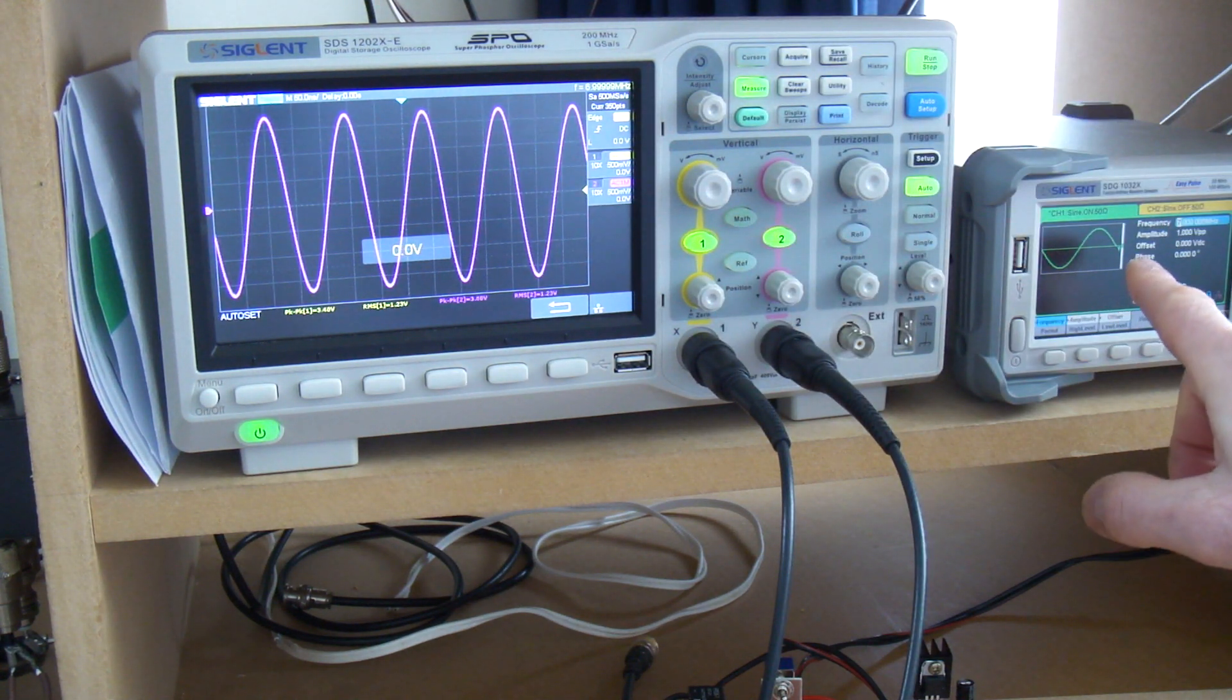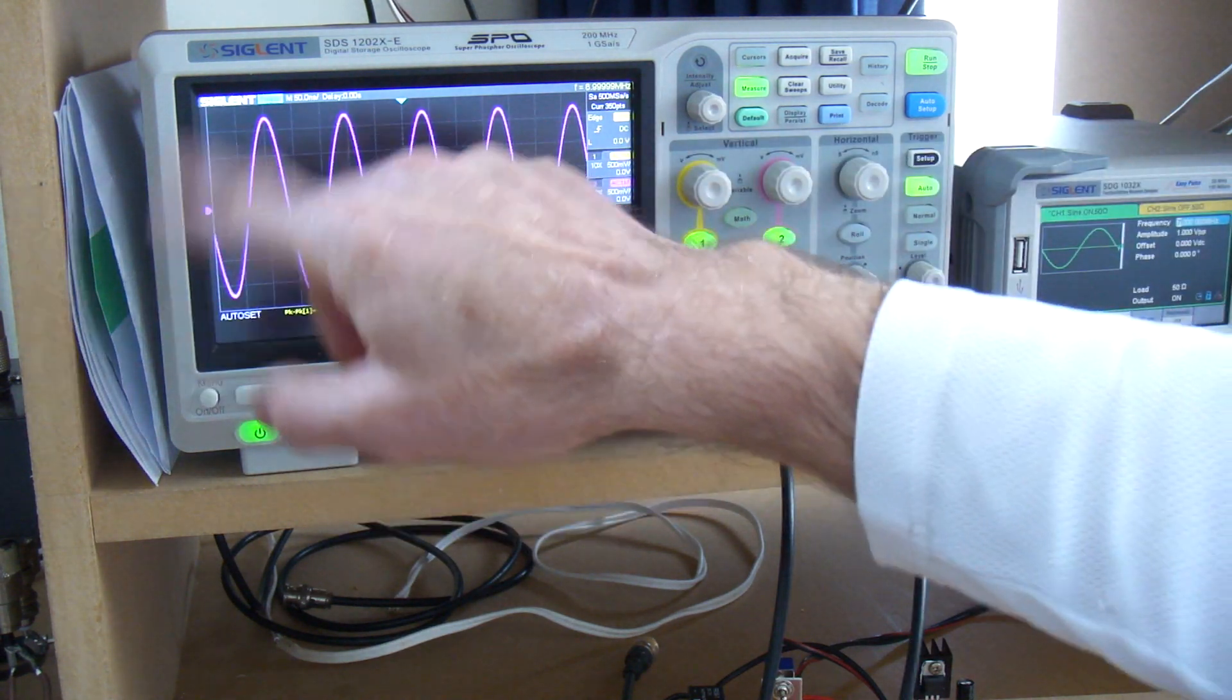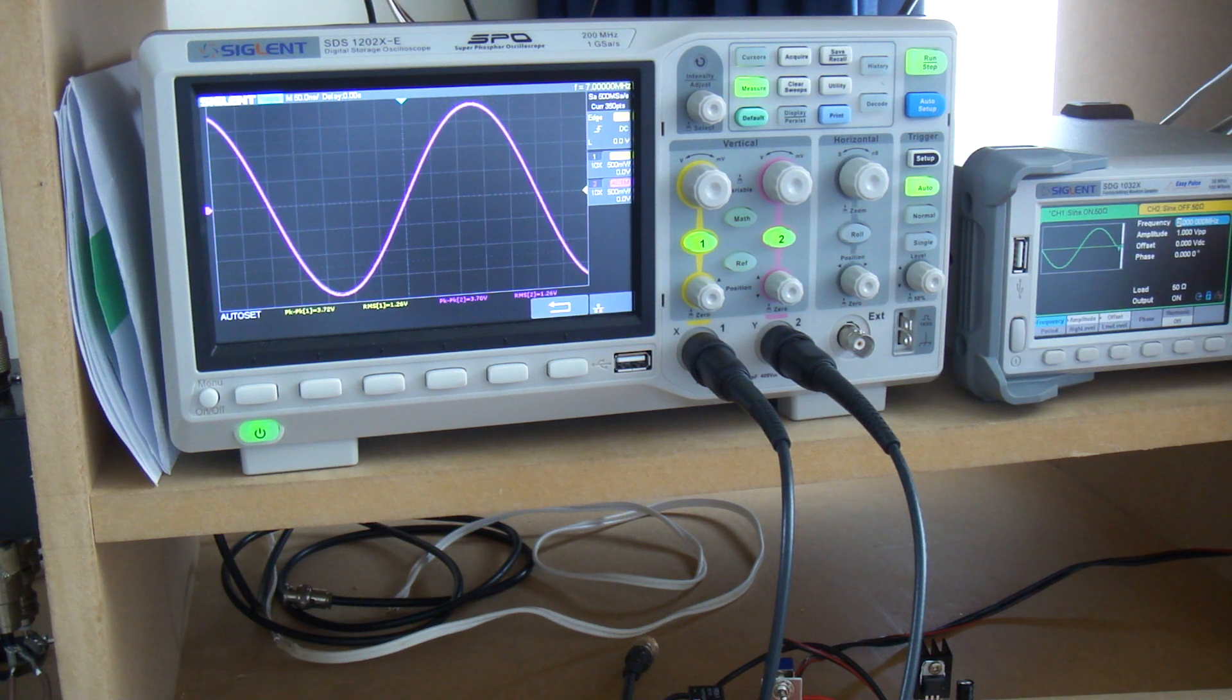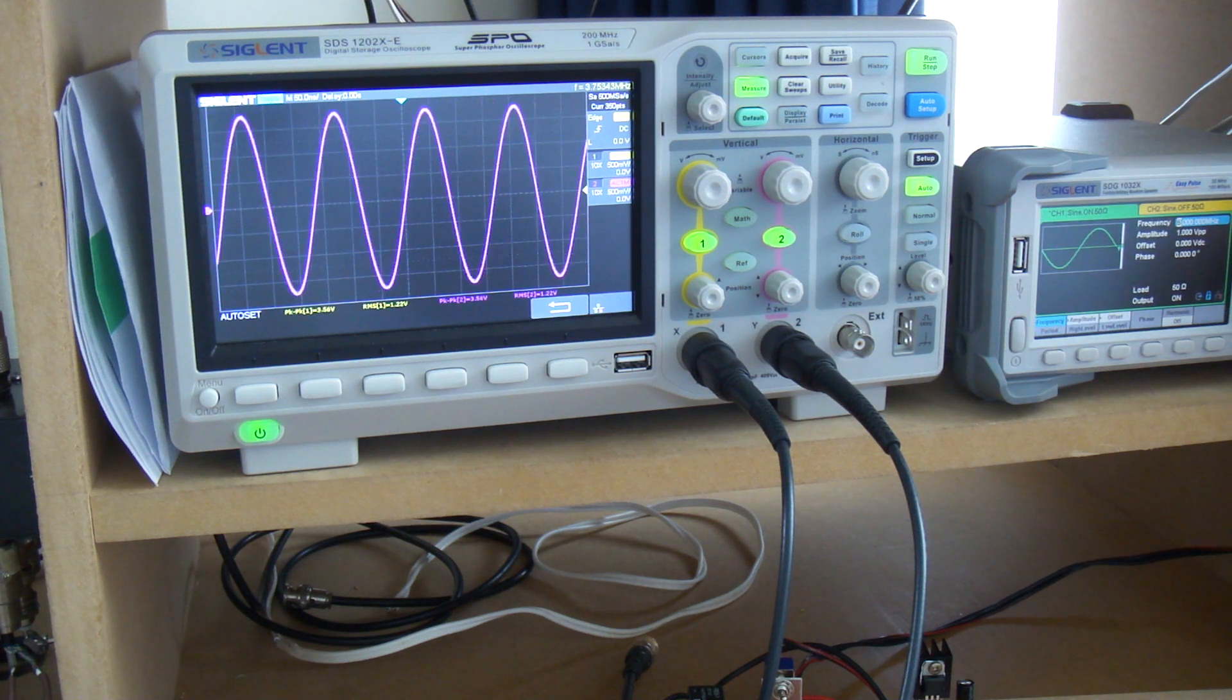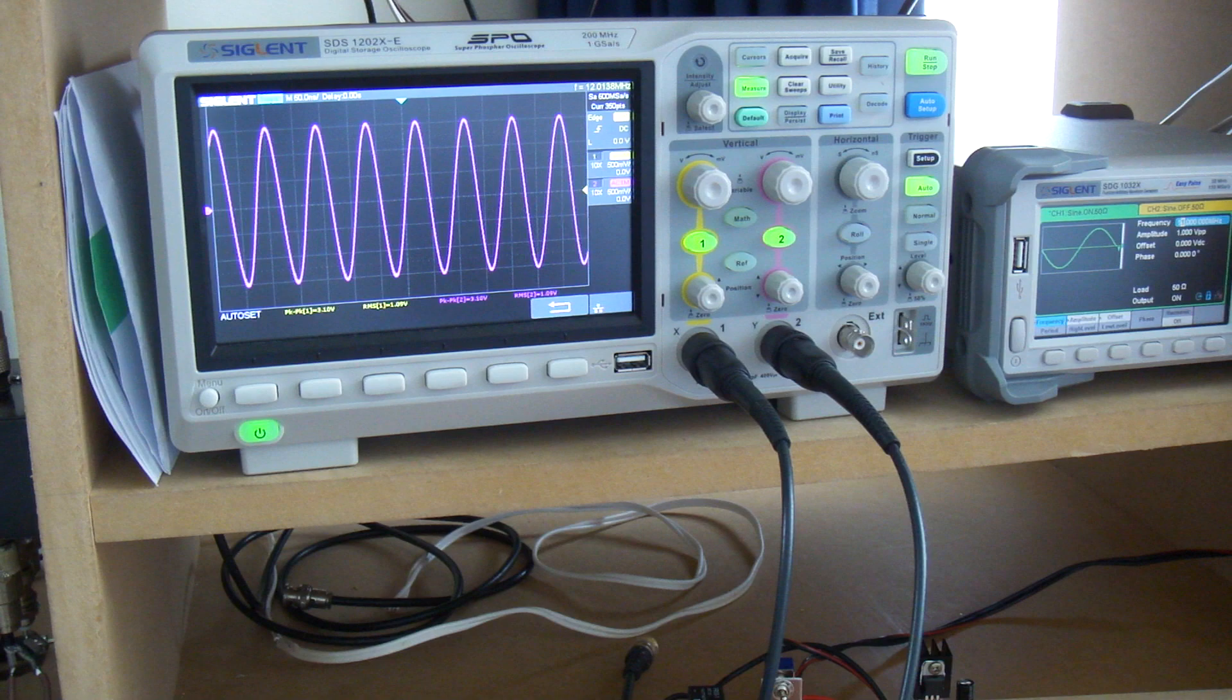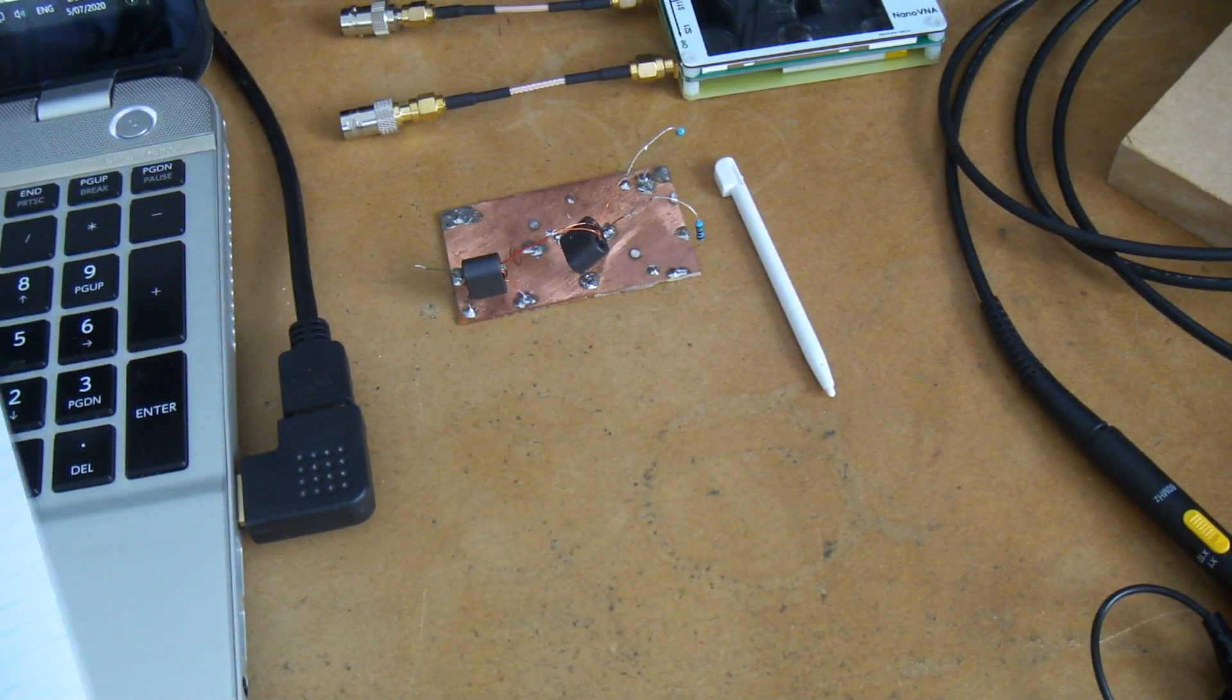On the signal generator, we've got seven megs coming out that's being split. If I reduce that down to one meg, two, three, four, five, six, seven - so not too bad. What I'll do is put on the SNA and have a look at that to show that as well.